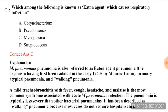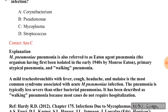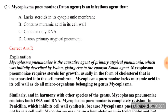Next question: which among the following is known as the Eaton agent, which causes respiratory infection? Options are Corynebacterium, Pseudomonas, mycoplasma, Streptococcus. The correct answer is mycoplasma, option C.